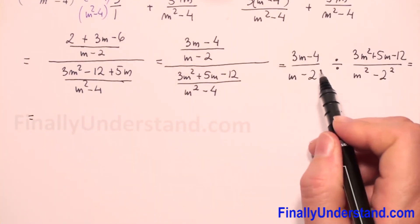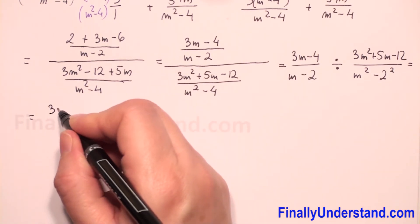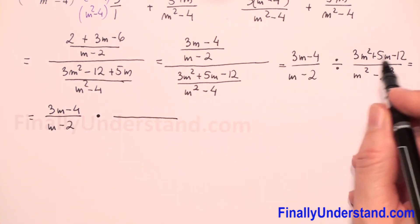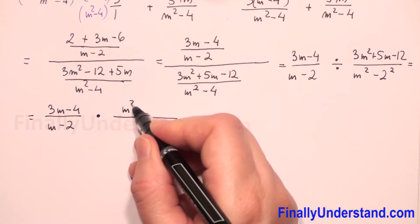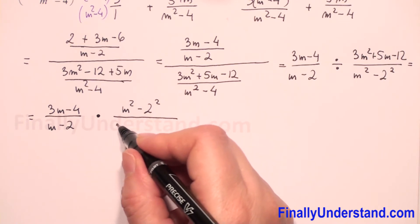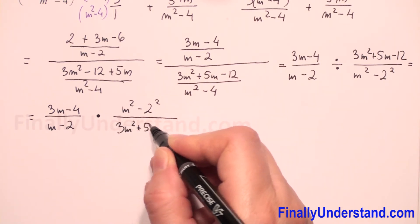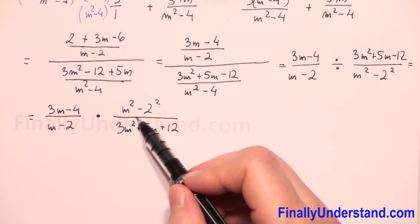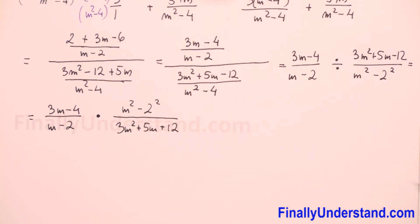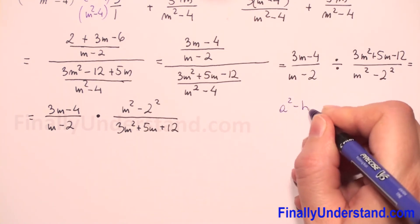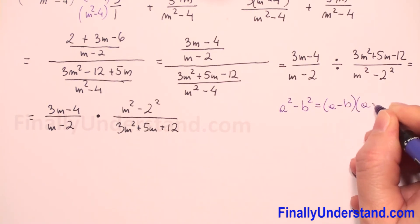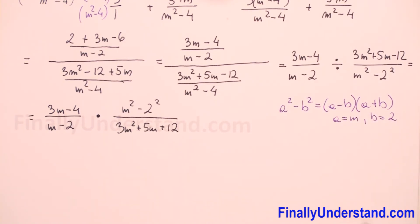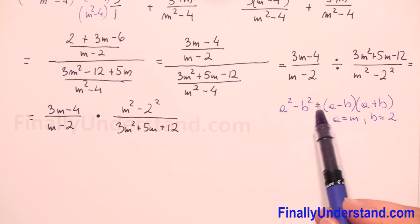Division of algebraic fractions means we copy the first fraction — (3m minus 4) over (m minus 2) — change the division sign to multiplication, and flip the second fraction. So it will be (m squared minus 2 squared) over (3m squared plus 5m minus 12). We can use the difference of two perfect squares formula: a squared minus b squared equals (a minus b)(a plus b). In our example a equals m and b equals 2.